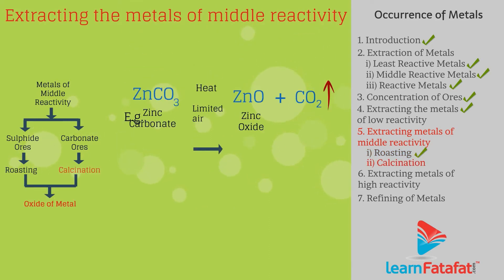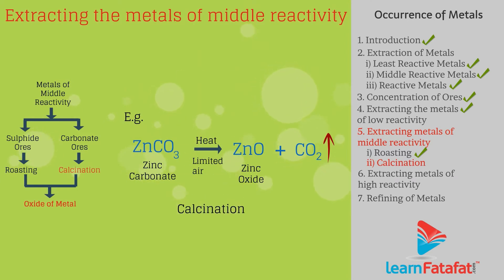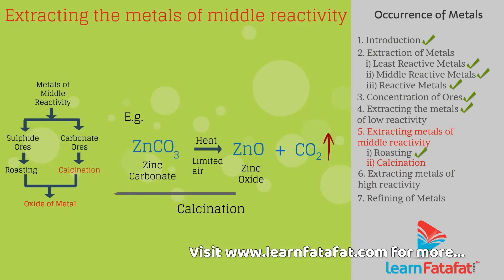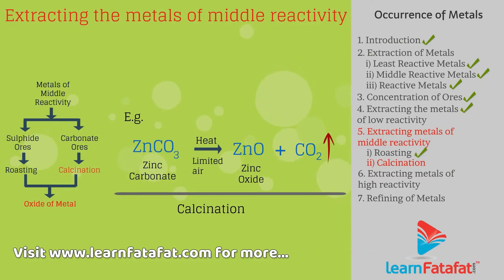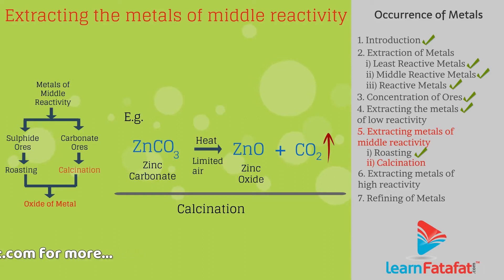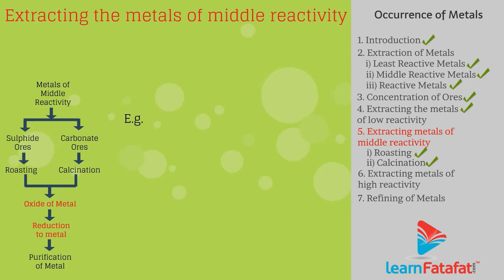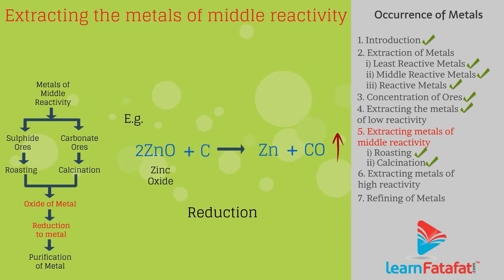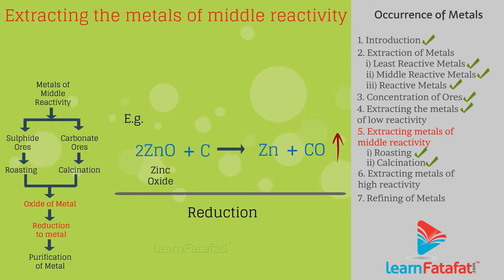The carbonate ore is heated strongly in limited air to get metal oxide. This process is called calcination. For example, ZnCO3 → ZnO + CO2. Metal can be obtained from metal oxides by removing oxygen through a reduction reaction or displacement reaction. For example, 2ZnO + C → 2Zn + CO2.